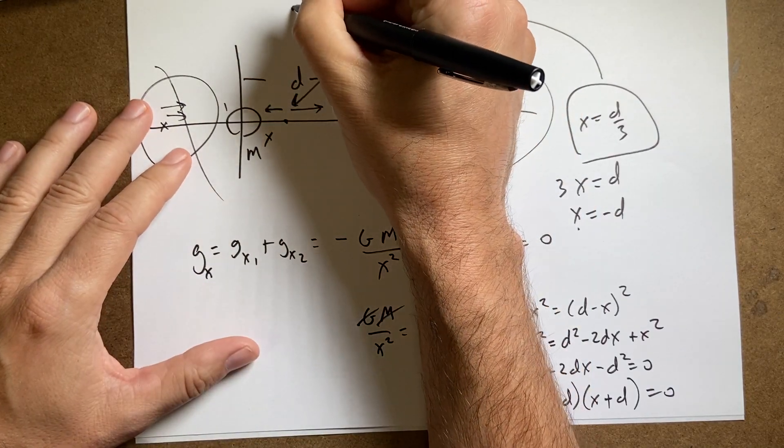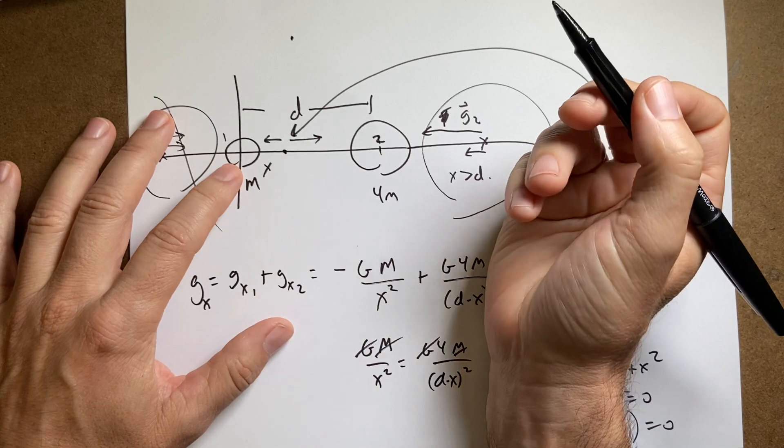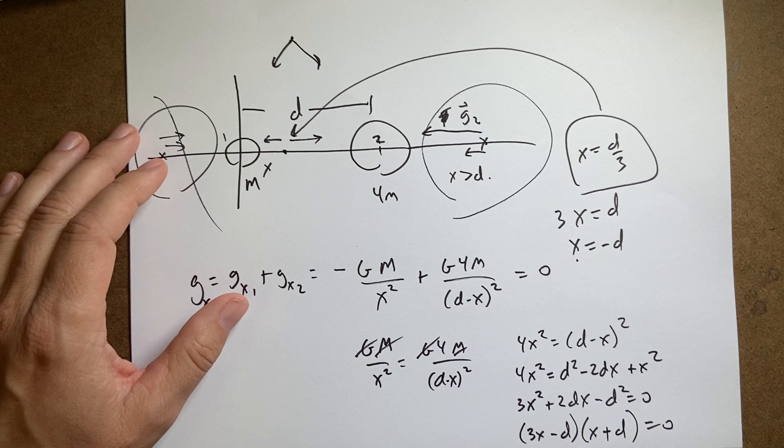Now, what about over here? What about off the x axis? Can I find the gravitational field of zero up there? No, because these are going to be in different directions. They can't add up to zero. The end.